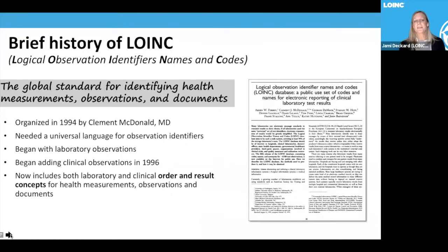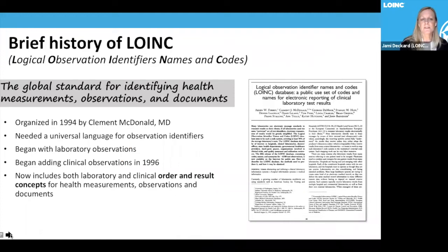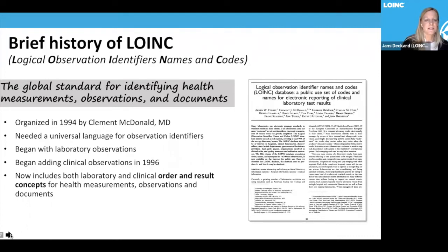A brief history of LOINC: around 1994, Clem McDonald realized there was a need for a universal language for observation identifiers, and they began with laboratory observations. Within a couple of years, they started adding clinical observations. Now LOINC has over 95,000 codes for both laboratory and clinical order and result concepts for health measurements, observations, and documents. LOINC stands for Logical Observation Identifiers Names and Codes.